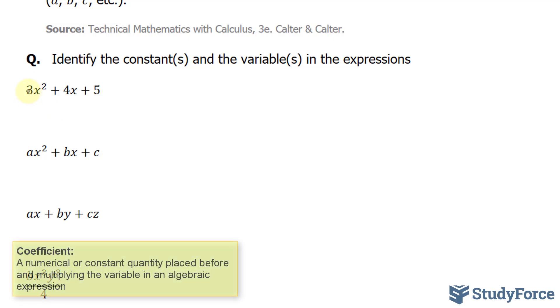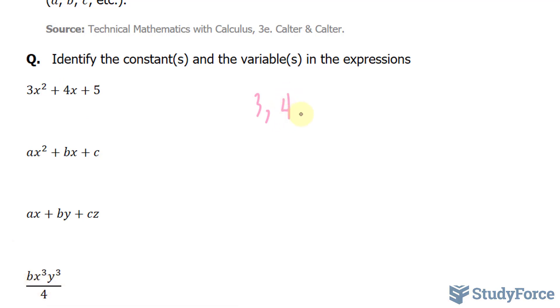The first term has the coefficient of 3 in front of x to the power of 2. That is a constant. 4 is the constant of the second term. And 5 is also a constant. The variables here, there's only one, it's x.